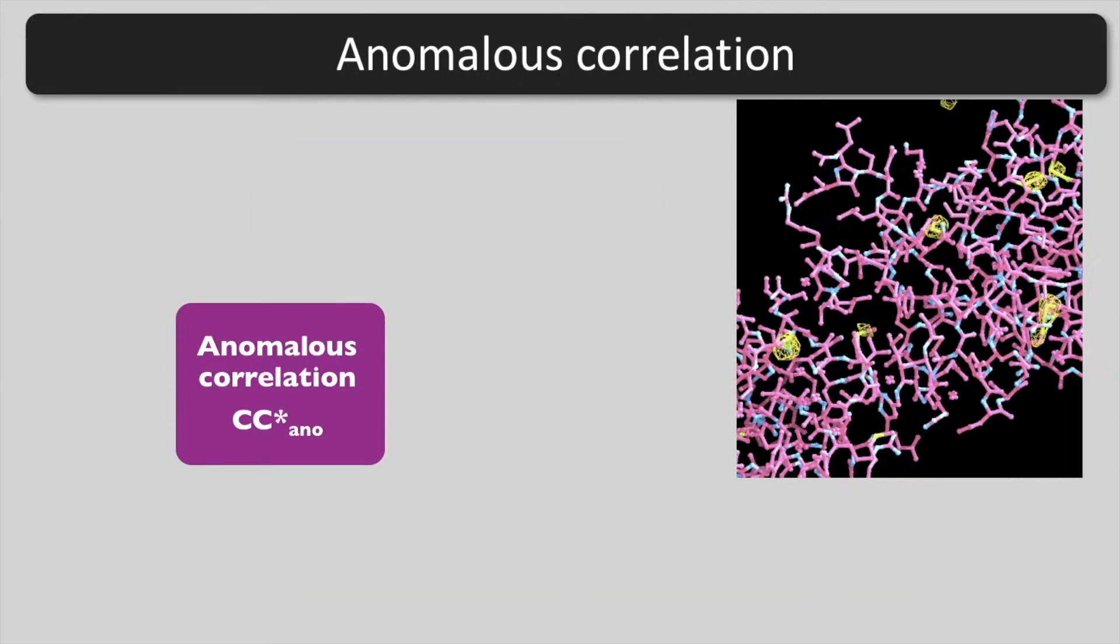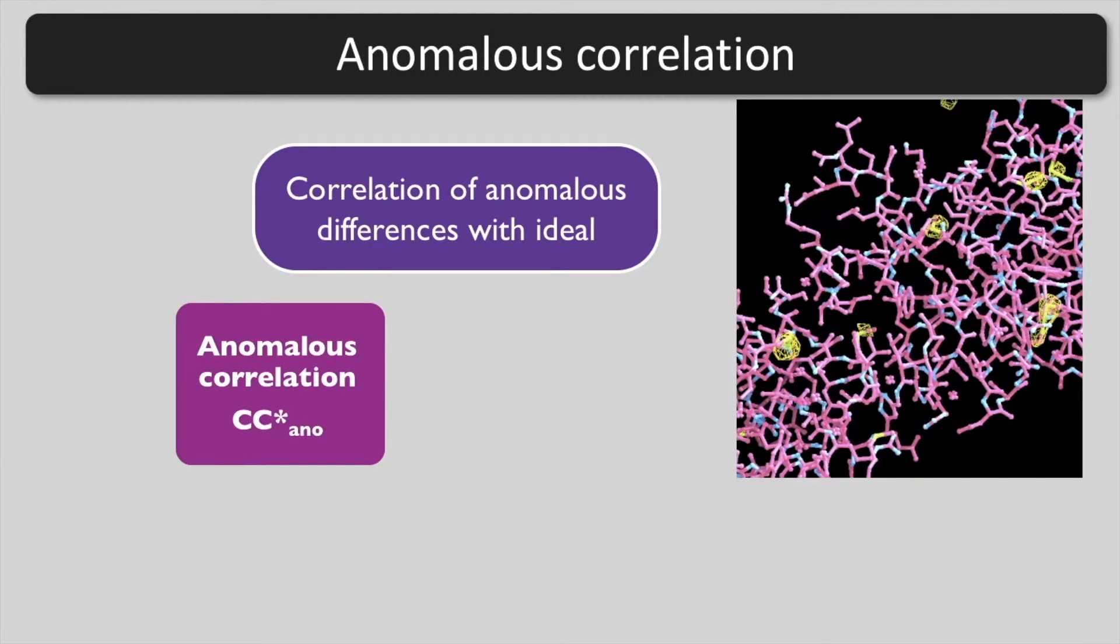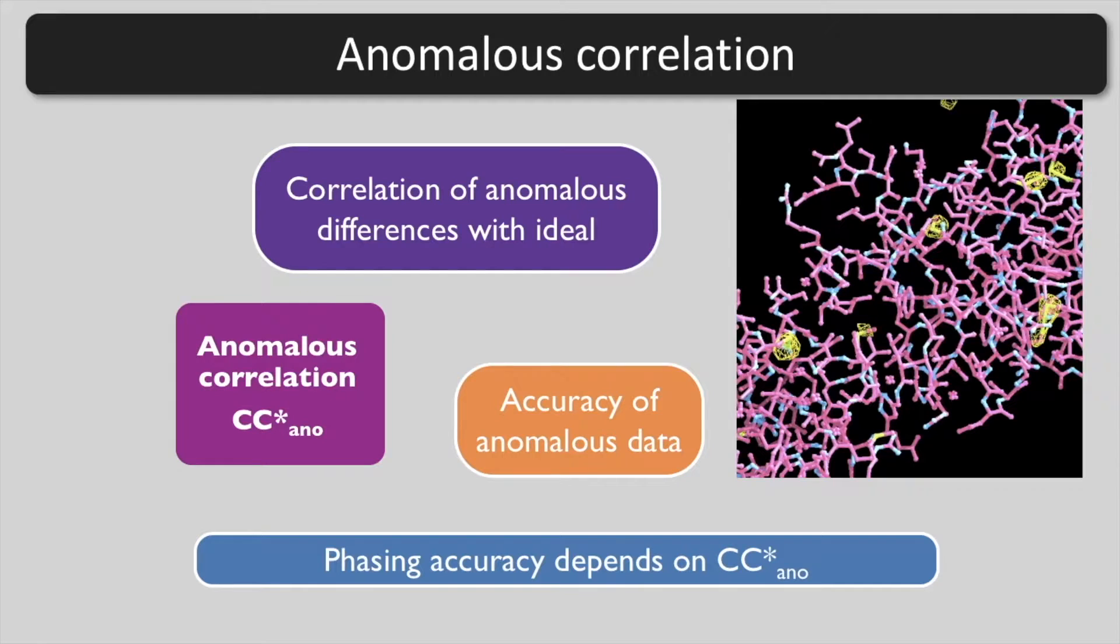The anomalous correlation CC*_anno is the correlation of your anomalous differences with ideal ones for your structure. It represents the accuracy of your anomalous data and it determines the accuracy of phasing and therefore the quality of the map that you can obtain.